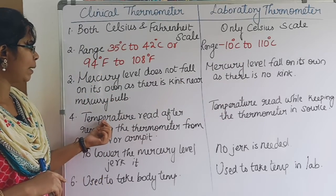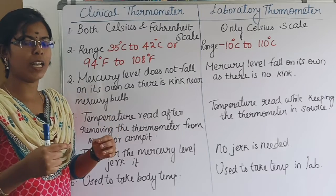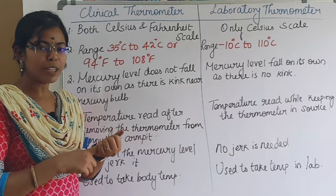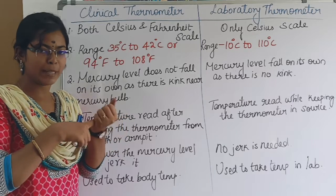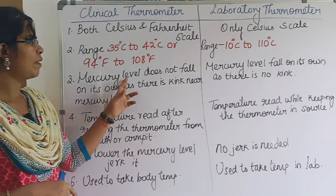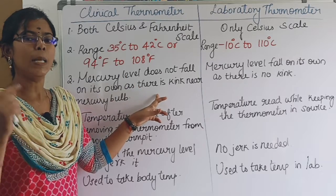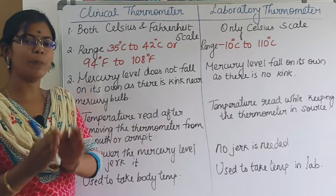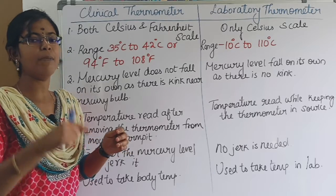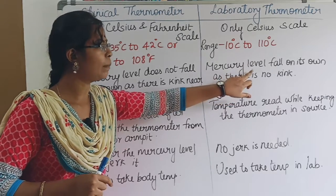If you read the temperature in the clinical thermometer after removing the thermometer from the patient's body, the temperature reading can still be obtained. The kink helps retain the patient's temperature reading. Before using it again, we have to jerk the clinical thermometer to bring the mercury level back down, because without a kink it would automatically fall.